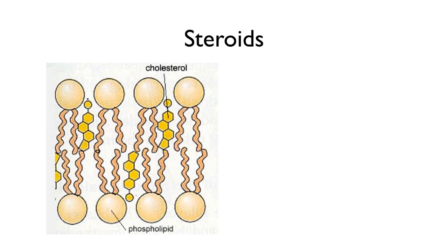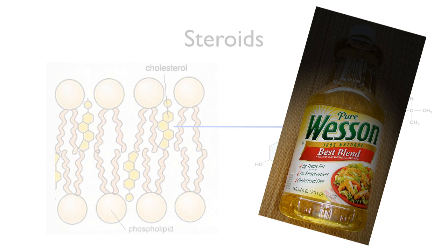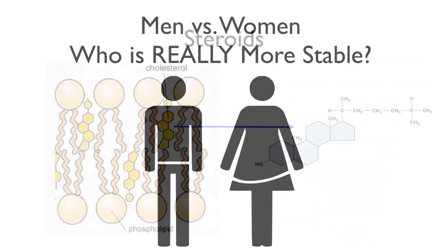Another group of lipids includes the steroids. The most famous steroid, and the one from which we build all of our steroid hormones, is cholesterol. Cholesterol, by the way, is only made by animals. So when you see those plant oil labels with 'cholesterol free' in huge letters, they didn't take the cholesterol out for you — plants don't make cholesterol.